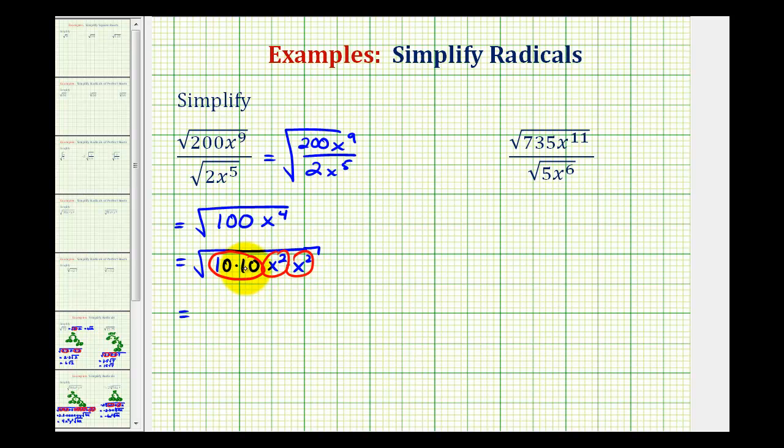So this simplifies perfectly. The square root of 10 times 10 is 10. The square root of x squared is x here, as well as here. So we have 10x to the second.